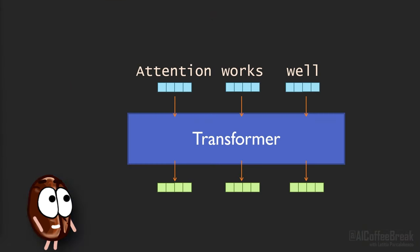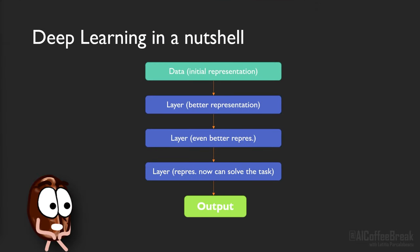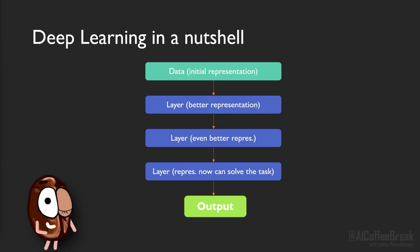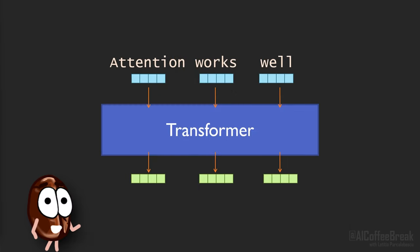To summarize, the prerequisite of transformers is that whatever the input, we must first decide on a way to represent it with vectors. All neural networks, including the transformer, process these vector representations into better and better representations with each layer, until the solution for the task is obvious in the final layer — or linearly separable if we want to use jargon. But compared to other neural networks, the transformer does this processing in a specific way.